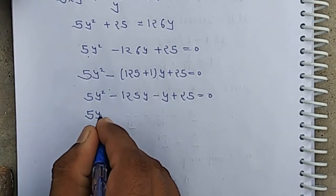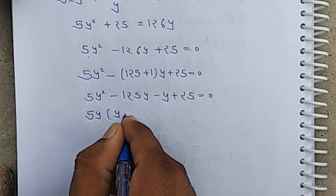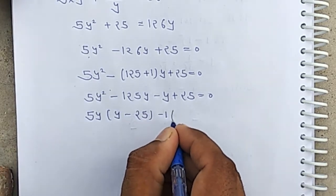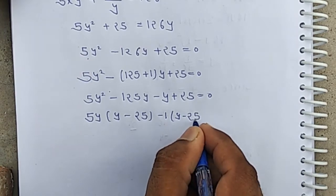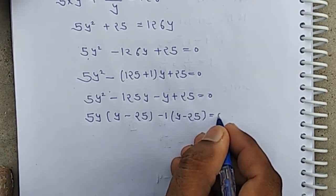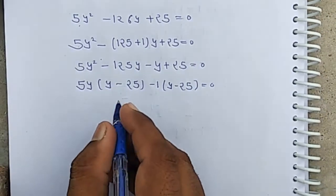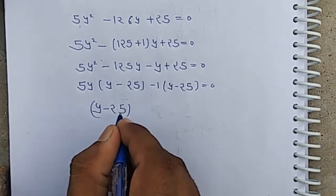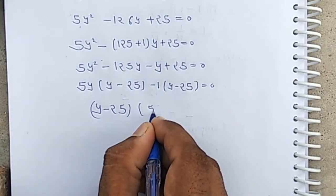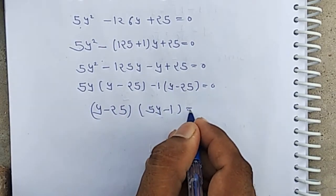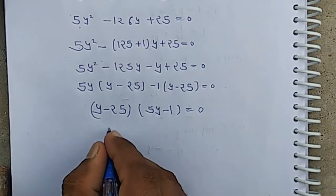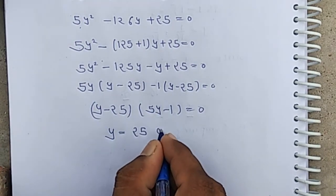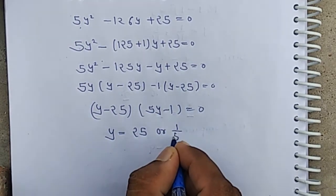Taking 5y common we have y minus 25, giving us 5y minus 25 and 5y minus 1 equal 0. The value of y equals 25 or 1 by 5.